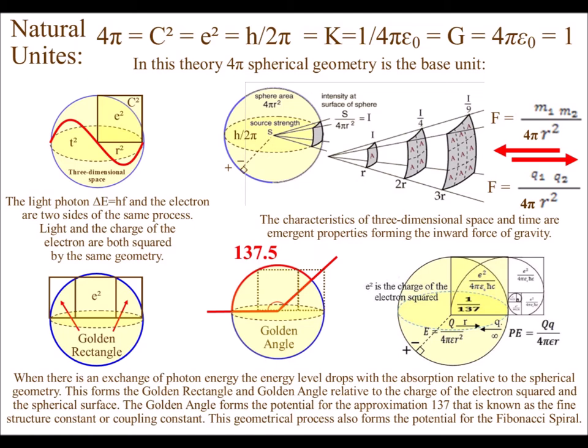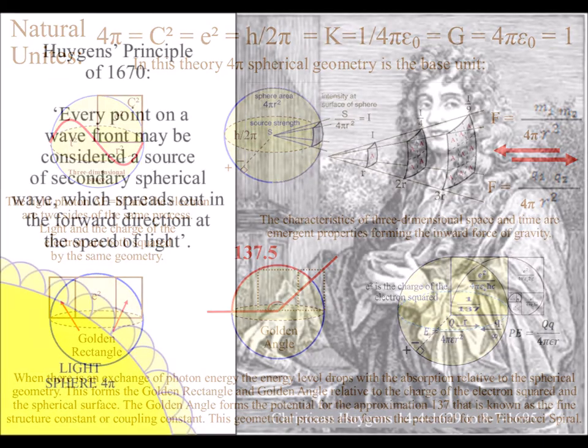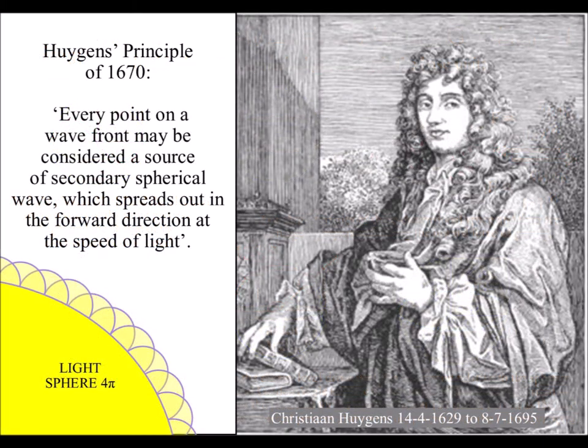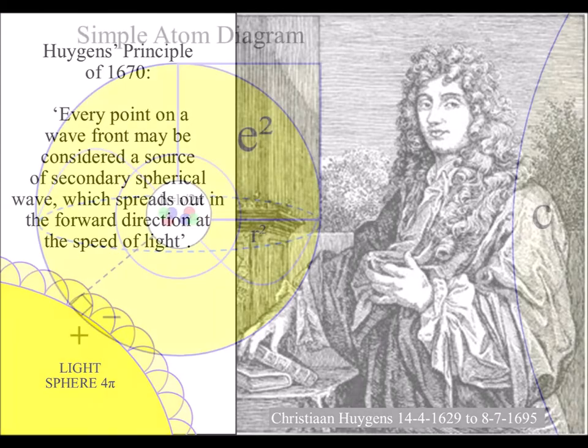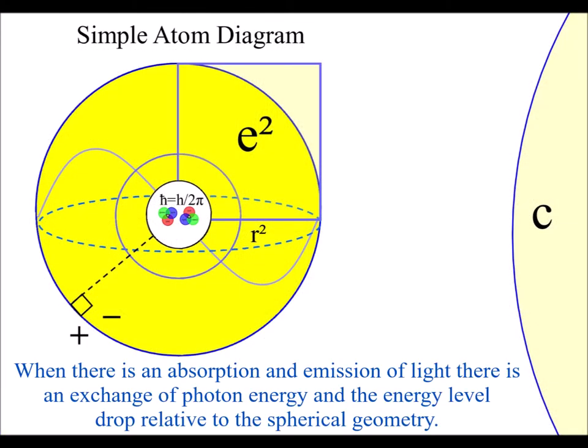Instead of setting the constants equal to 1, we set them to 4π representing spherical geometry. This is possible because light waves are spherical, and the electron cloud that surrounds the nucleus of an atom is also spherical.